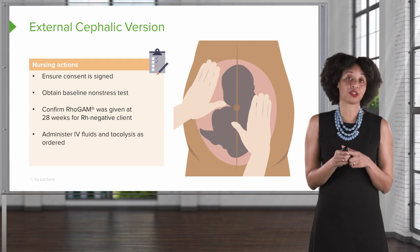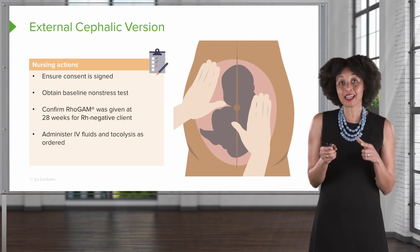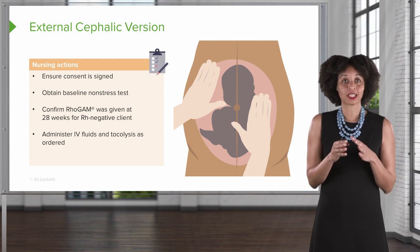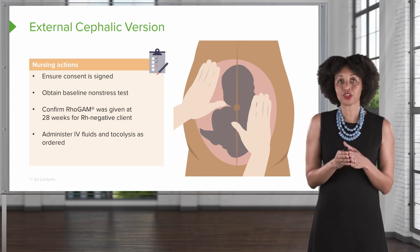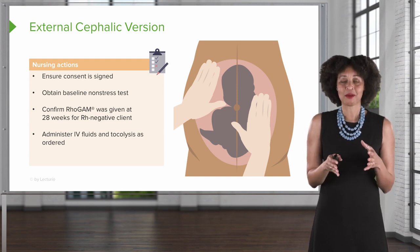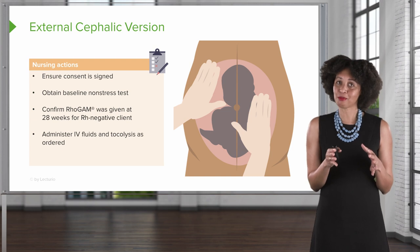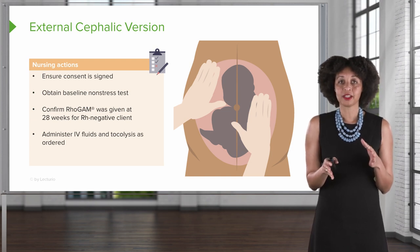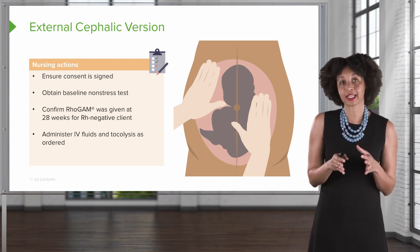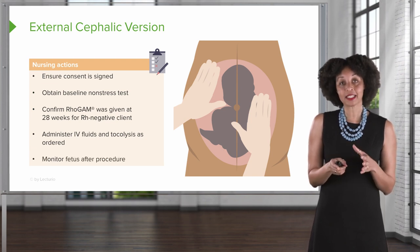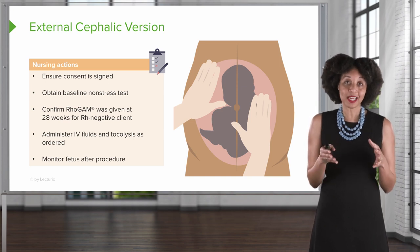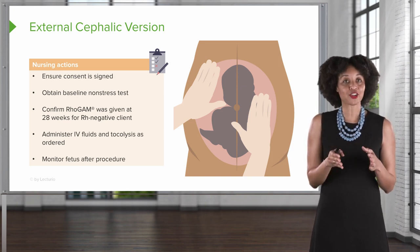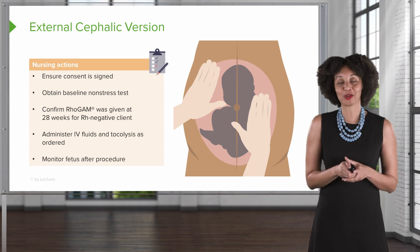It's also important to make sure that an IV is established. In case there are any complications, labor starts, or we experience fetal distress, that access is going to be really important. Also, to calm the uterus down — because sometimes it's a little irritated even before we start — the provider may order a tocolytic. And finally, after the procedure is done, the nurse will repeat that non-stress test and make sure the fetus is A-OK before moving on.